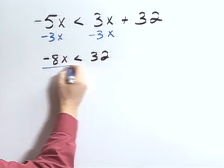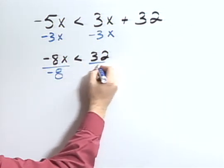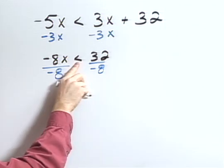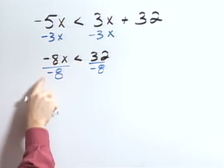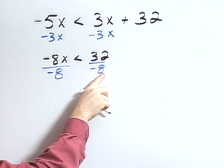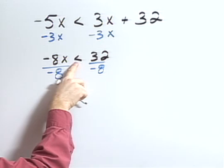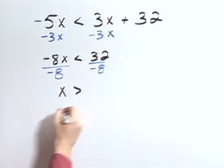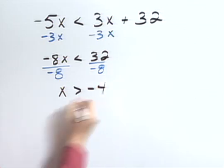Next, I want to divide both sides by negative 8. Now the one extra rule I have to realize when solving inequalities is any time I multiply or divide by a negative, I change my inequality sign. So this becomes x is greater than negative 4.